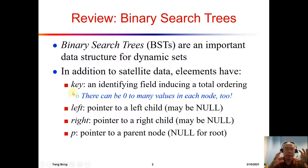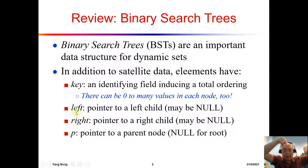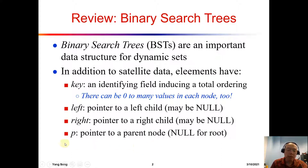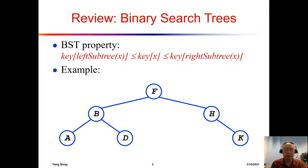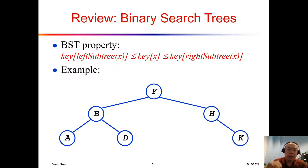For each node in the tree, we have a key which is the unique identifier, and we also have two pointers to the left child and the right child. We also have a pointer P which refers back to the parent of the current node. For the binary search tree, there is a very important property: the key on the left subtree should be smaller or equal to the key of the current node, and the key of the current node should be smaller or equal to the key on the right subtree.